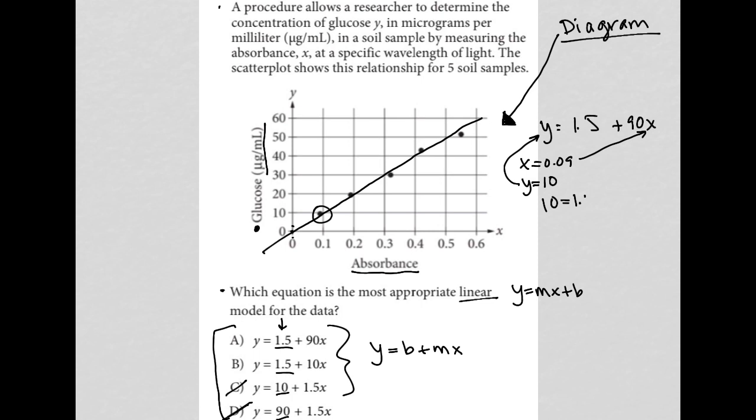So I'm going to take those points and plug them in to the equation. So here I would get 10 instead of Y, equals 1.5 plus 90 times 0.09. I go to my calculator. What is 90 times 0.09? I get 8.1. So I have 1.5 plus 8.1 equals 10. And this ends up being 9.6.